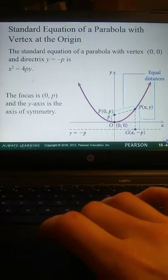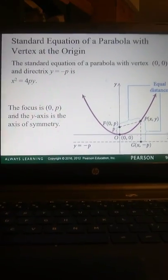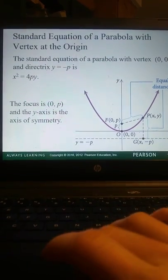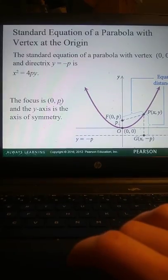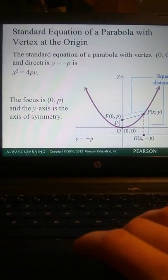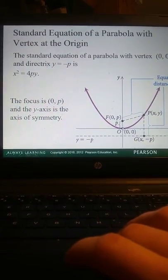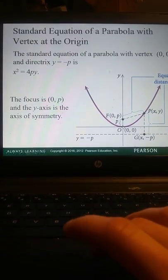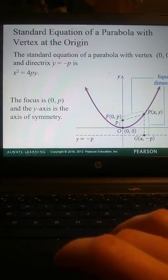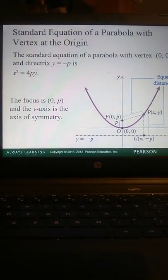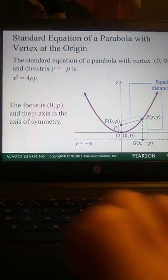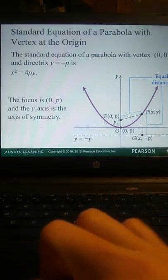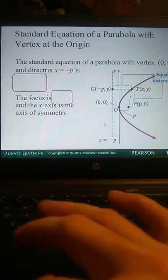X squared equals 4PY. So instead of Y equals something X squared, we have X squared by itself and then this 4PY. So you'll see how this works when we work some equations. But P is representing that distance that the focus falls on the axis of symmetry from the vertex. And then negative P would be the distance where the directrix, or that line beneath the vertex or above it if P happens to be negative, is going to fall.